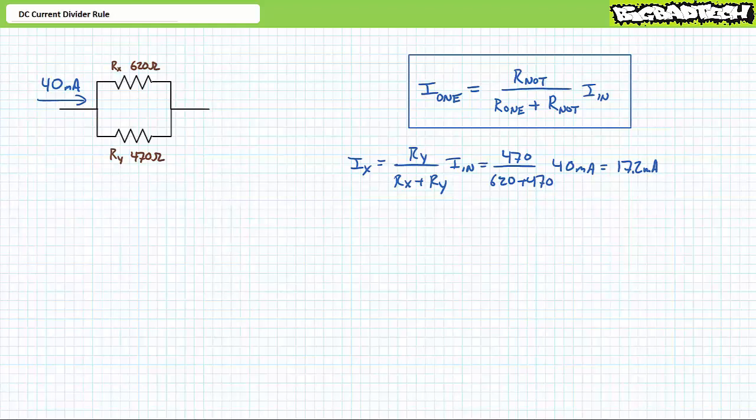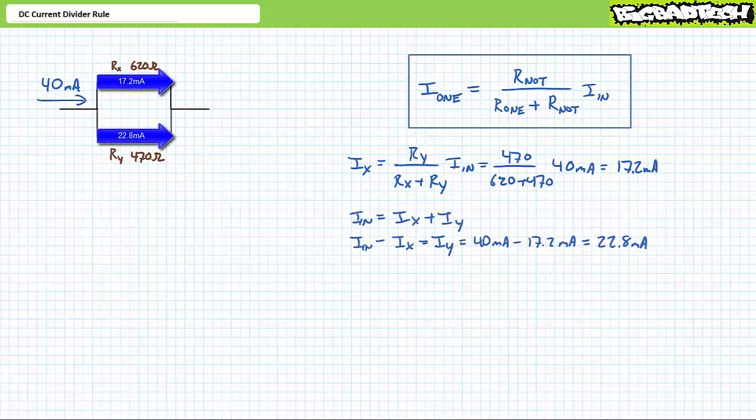We could use another application of the DC current divider rule to solve for IY. However, I suggest a far more efficient means of doing so, namely, Kirchhoff's current law. Given 40 milliampers of current enters the parallel relationship, and 17.2 milliampers is routed through RX, an algebraic rearrangement of the Kirchhoff's current law equation for this parallel relationship suggests that IY equals IN minus IX. Substituting our given values yields IY to be the remaining 22.8 milliampers.